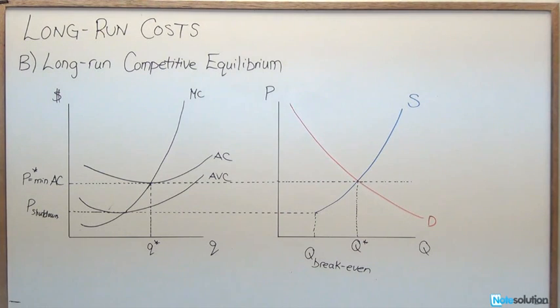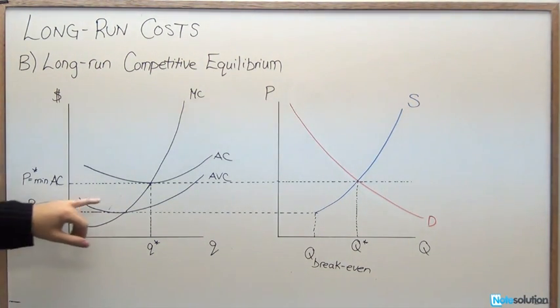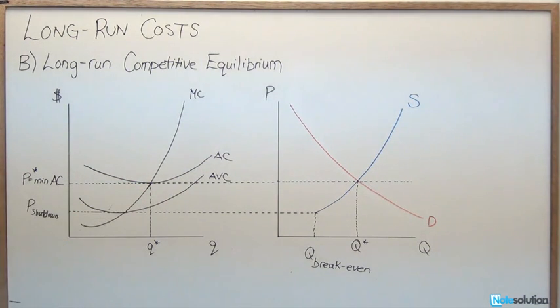In the long run, however, we're going to say two things. One, no firm is going to want to earn an economic loss forever, and no firm is going to be able to earn an economic profit forever either. In the long run, the price is going to converge to exactly average cost. So in the long run competitive equilibrium, every firm will be producing at the break-even point.